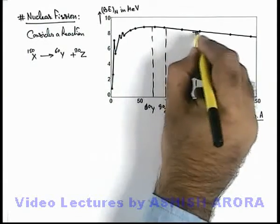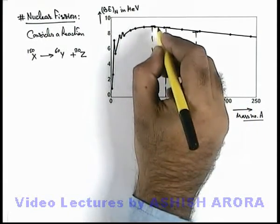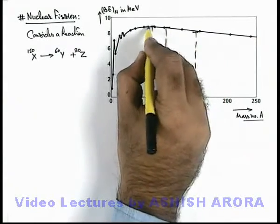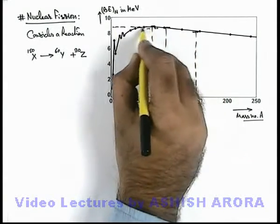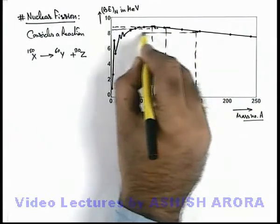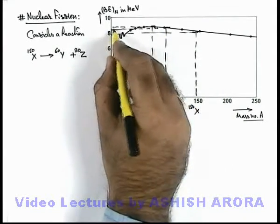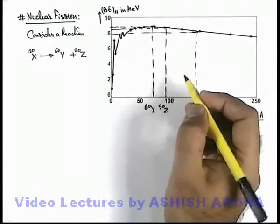So when this X splits into Y and Z, here we can see the binding energies of Y and Z are more compared to that of X per nucleon. That's why we can say Y and Z are more stable.